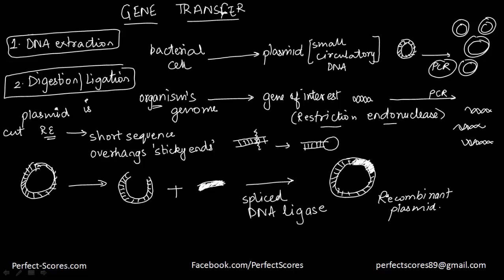You might wonder why we need a plasmid for all of this. Remember, a plasmid can replicate itself — you do not need mitosis or meiosis to help it replicate, and it can also exist independently. That's why we need something that can exist independently but at the same time can also carry the gene of interest.